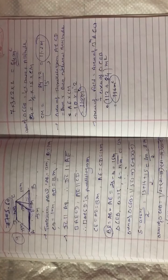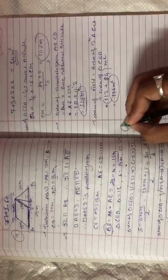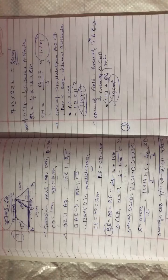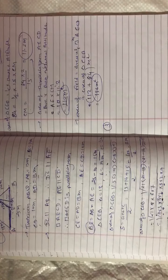Now question number 3: a picture of an aeroplane is made with colour paper. Find the total area of paper used. Looking at the figure, the aeroplane has 5 parts in total.